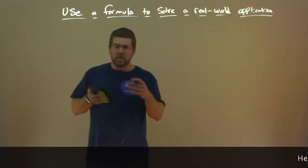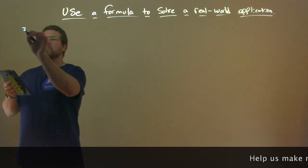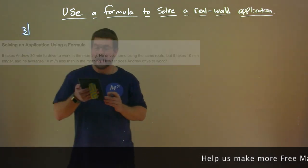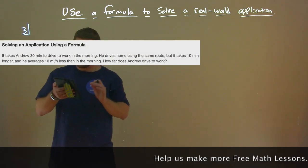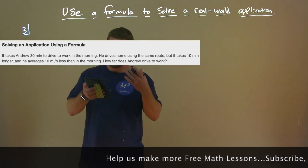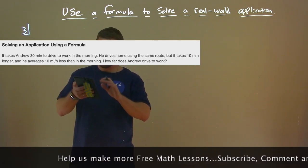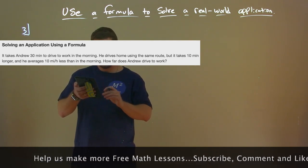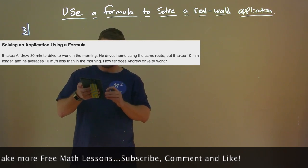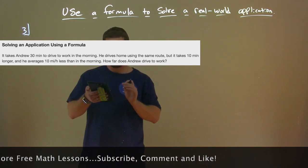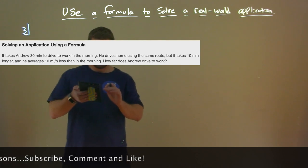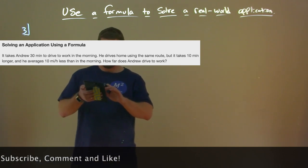Our first example is number 3, and it's talking about Andrew. It takes Andrew 30 minutes to drive to work in the morning. He drives home using the same route, but it takes 10 minutes longer, and he averages 10 miles per hour less on the way home. How far does Andrew drive to work?